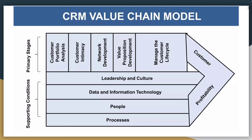Second is the CRM Value Chain model, which you can see in the diagram. The steps are divided into two categories: Primary and Secondary Supporting. In the primary stage you have customer portfolio analysis, customer intimacy, network development, value proposition development, and manage the customer lifetime value. The supporting activities include leadership and culture, data and information technology, people, and process.